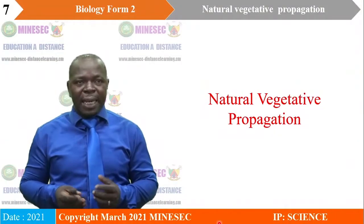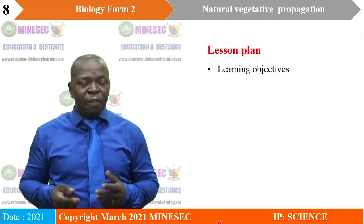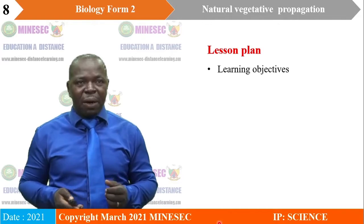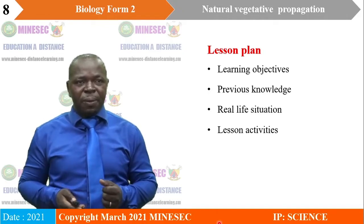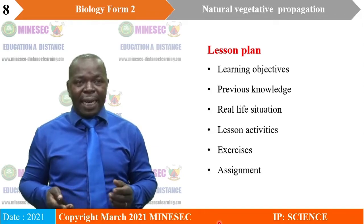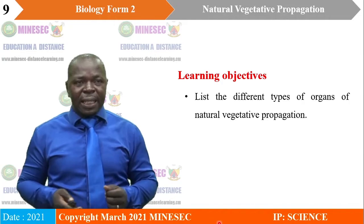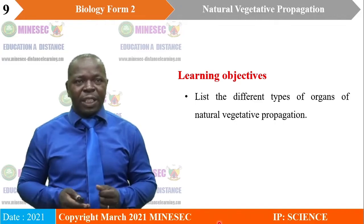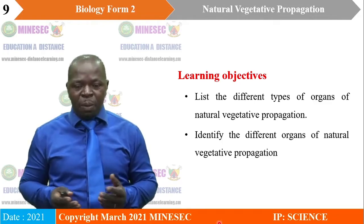Our lesson for today is entitled Natural Vegetative Propagation. This lesson shall be examined following this plan: learning objectives, previous knowledge, real life situation, then lesson activities, exercises, and an assignment will be given by the end of the lesson. By the end of this lesson, learners should be able to list the different types of organs of natural vegetative propagation and identify the different organs of natural vegetative propagation.